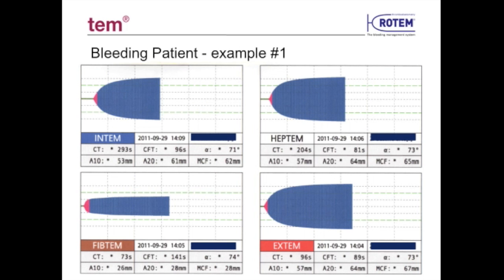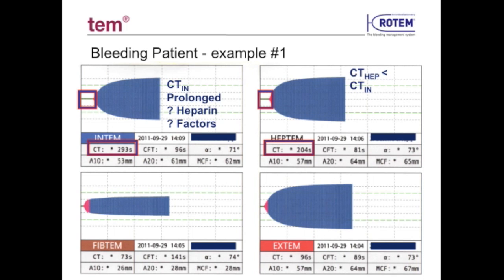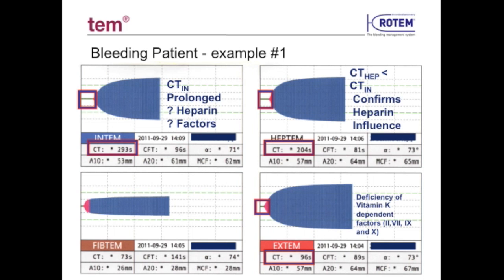This example is of a post-operative cardiac surgery patient experiencing moderate bleeding. The CT in Intem is prolonged at 293 seconds. A Heptem test confirms the prolongation in Intem is due to heparin, and therefore this patient would benefit from additional heparin reversal. The CT in Extem shows a slight prolongation, which may be due to a deficiency of vitamin K-dependent factors, but this may not cause clinically significant bleeding.